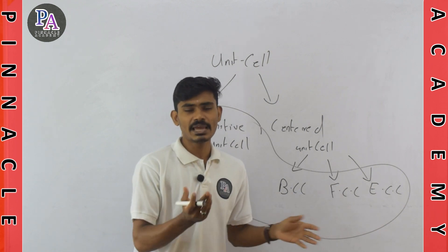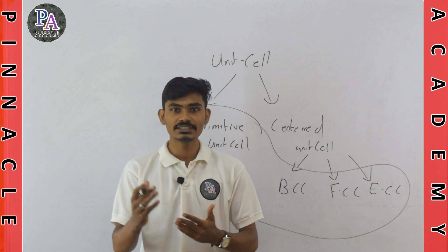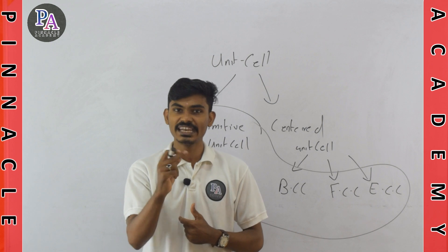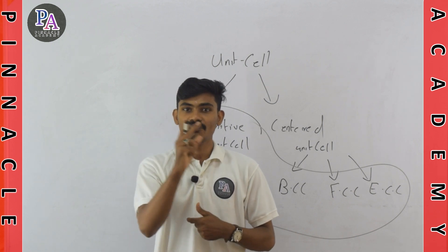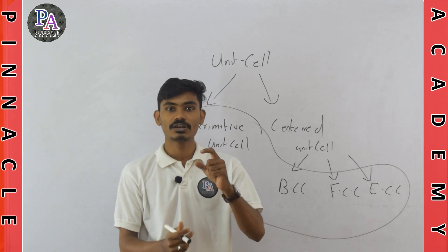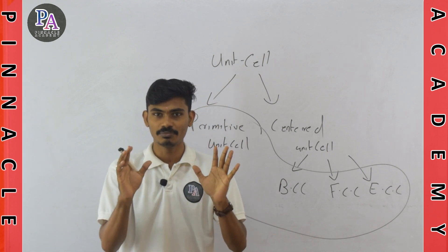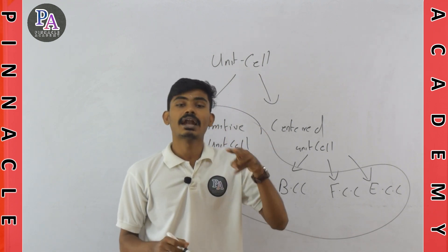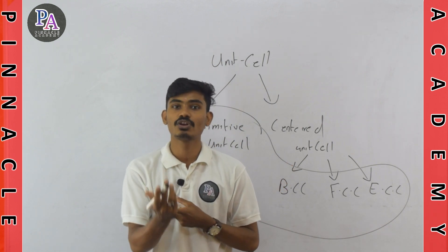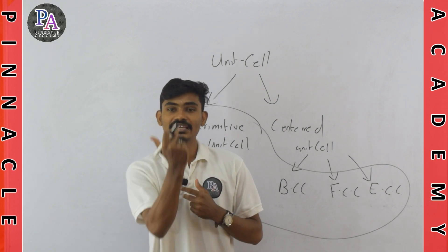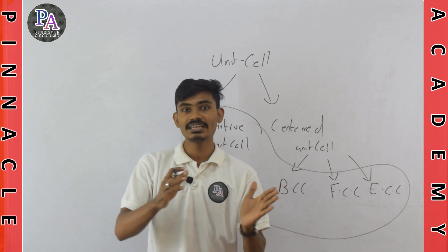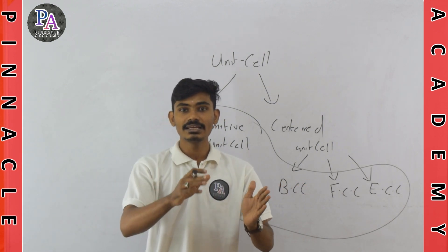The end-centered cubic is a type similar to face-centered cubic, but the difference is that along with the eight corners we have a constituent particle on opposite faces — not all six faces, but only two faces that are opposite to each other. The definition of this is the end-centered cubic.